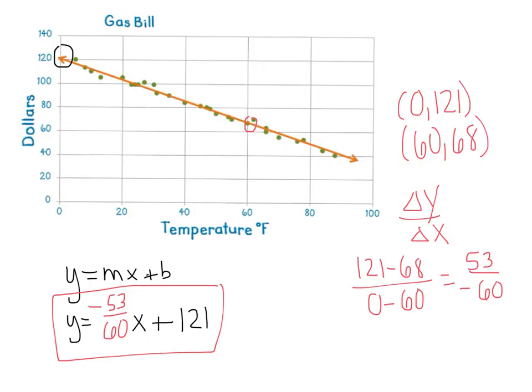So I'm going to just check and see, okay if I put 40 in for x into this equation will my y match up with what it should be roughly on my graph. So we're going to figure out for a temperature of 40 degrees. So y equals negative 53/60 times 40 plus 121. If I do negative 53/60 times 40 I get negative 35 and one third, and then if I add 121 to that I get y equals 85 and two thirds.